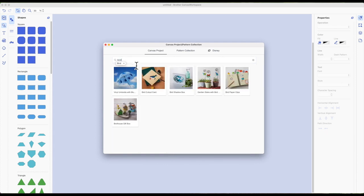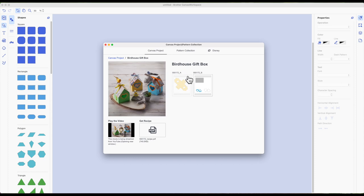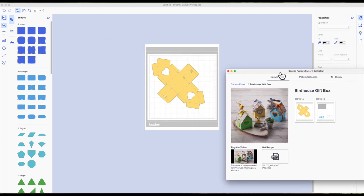This will bring up all the bird projects along with the one that we are making, which is this one here, the birdhouse gift box. Go ahead and click on that. You see it has a mat A and a mat B. Mat A is for the box itself and then mat B is for the roof piece and also the heart cutouts. I'm going to click on mat A to send that to our workspace. Move this out of my way. We can see we now have that piece inside our canvas.